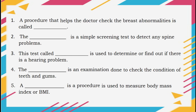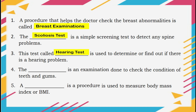Number 1: A procedure that helps the doctor check the breast for abnormalities is called breast examination. Number 2: The blank is a simple screening test to detect any spine problems. The answer is scoliosis test. Number 3: This test called blank is used to determine or find out if there is a hearing problem. The answer is hearing test. Number 4: The blank is an examination done to check the condition of teeth and gums. The answer is dental test.